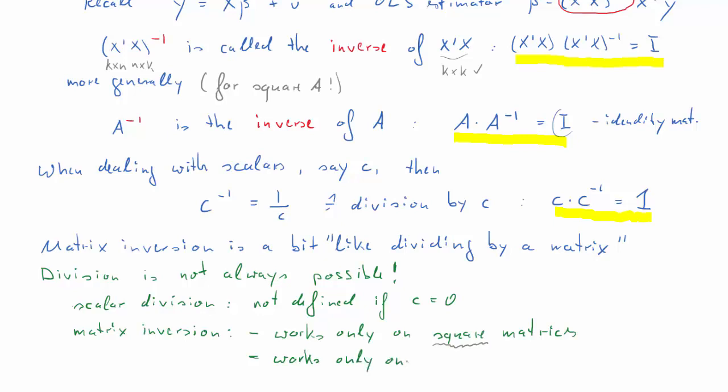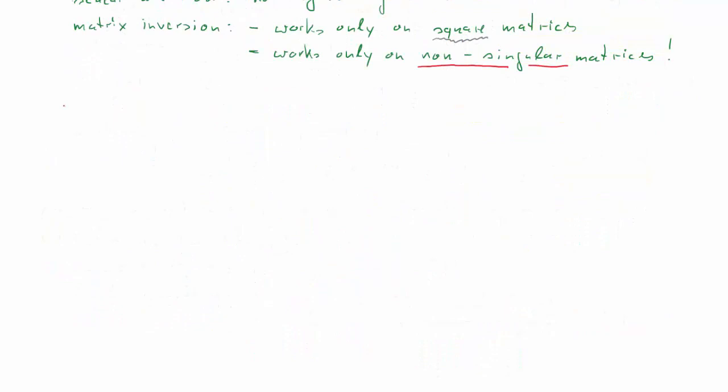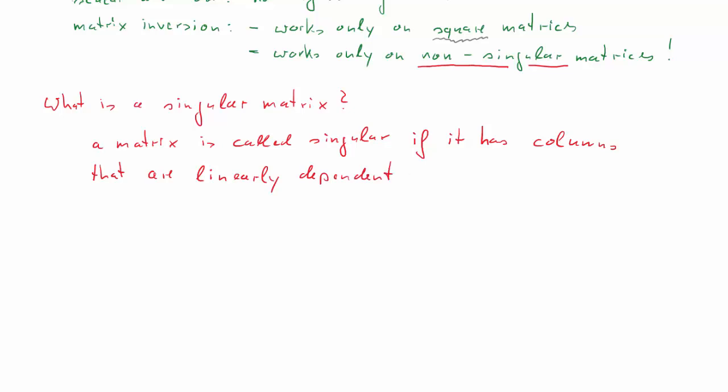Now the same is valid for x prime x. Now in our world, in our setup, x was an n by k matrix, so x prime is k by n times n by k. So by definition, that x prime x is already a square matrix. And therefore we can apply matrix inversion to it from that perspective. The second condition is that the matrix which we want to inverse really has to be what we call a non-singular matrix. Now what that means, that comes next. What means non-singular? Let's talk about it.